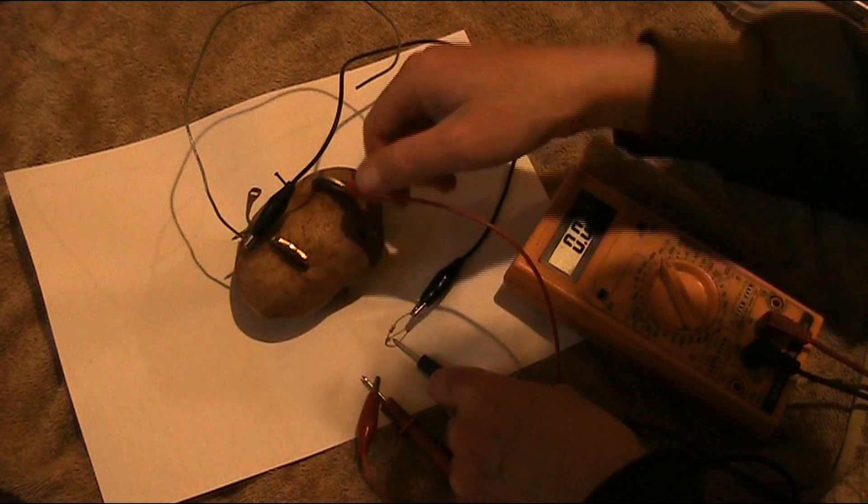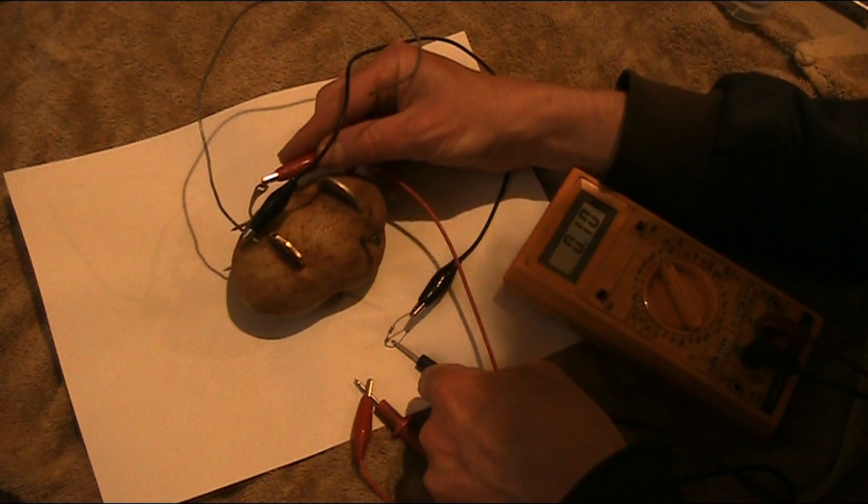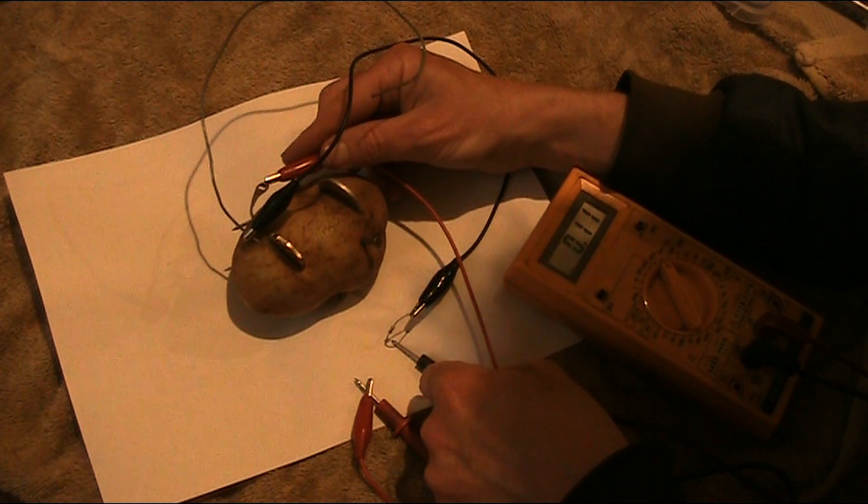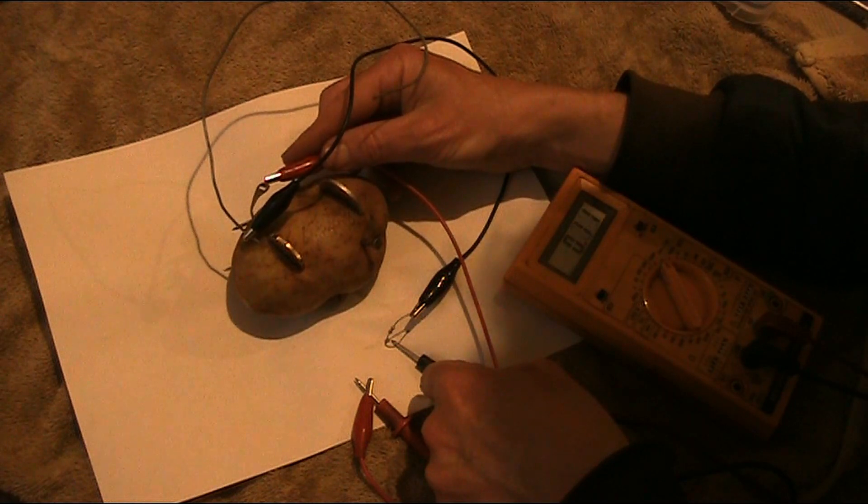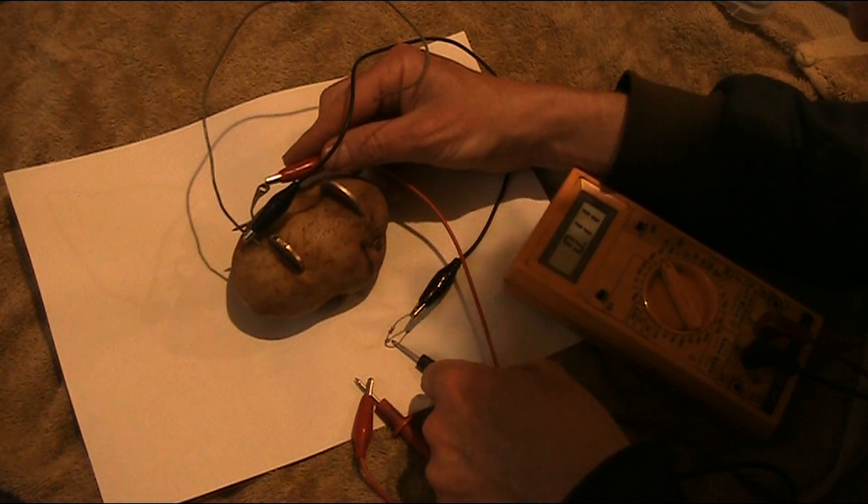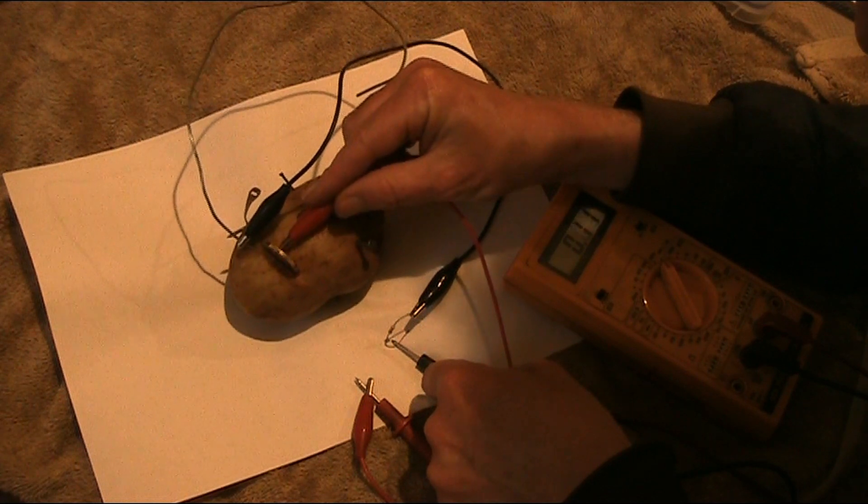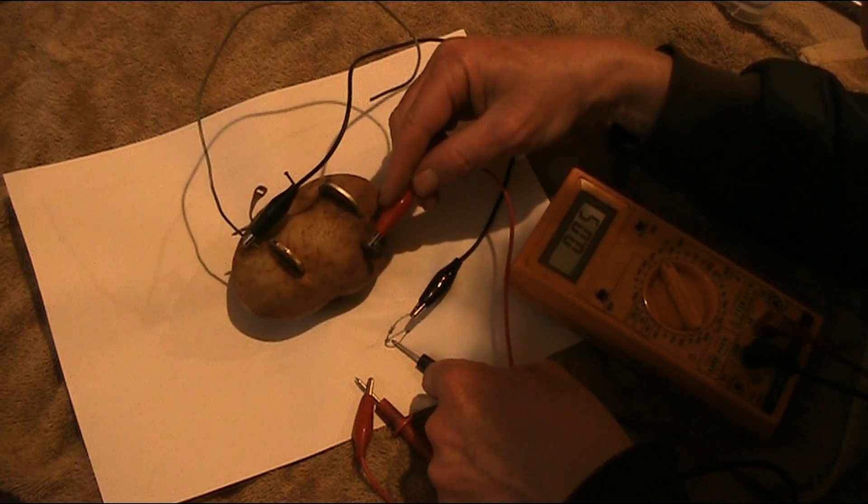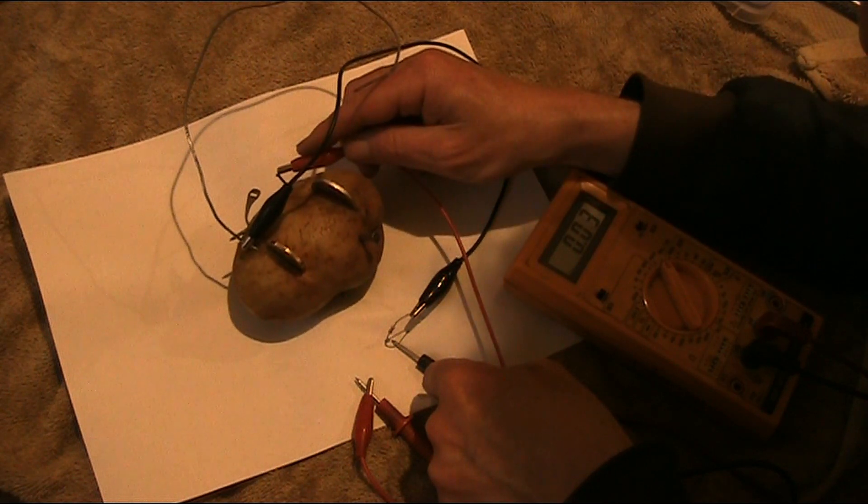Now I'll just probe around, looking not for increased voltage but increased current. Right here we've got the brass strip and the galvanized wire next to it, and that's a bit better - 110 microamps. I'll just probe here. And it's a similar value over here. And it drops.